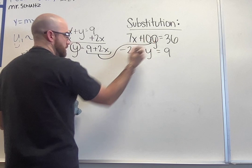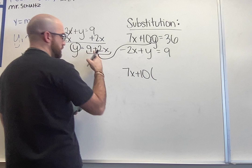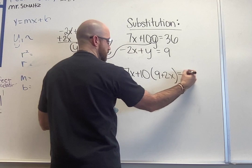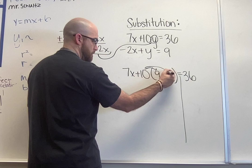I'm going to write this out. Everything will stay the same. 7x plus 10, I'm replacing the y value here with 9 plus 2x because that's what we said y was equal to, equals 36. Everything else about that problem stays the same. Now I'm going to go through and solve for x. I distribute my 10. 10 times 9 is 90. 10 times my 2 is 20x.